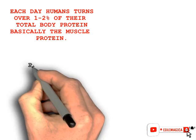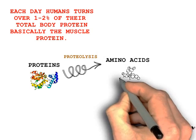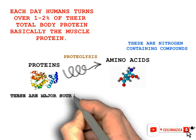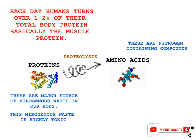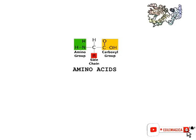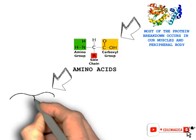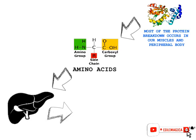Breakdown of protein is known as proteolysis. Upon proteolysis, proteins are broken down into individual amino acids. These amino acids are nitrogen-containing compounds, and proteins are a major source of nitrogenous waste in the body. These wastes are highly toxic. Millions of proteins are broken down in our body every single day, which produces a lot of nitrogen waste. Most of the protein breakdown occurs in the muscle and peripheral body, and the nitrogen waste produced must be taken to the liver for detoxification, where it is converted into a far less toxic, water-soluble compound known as urea.